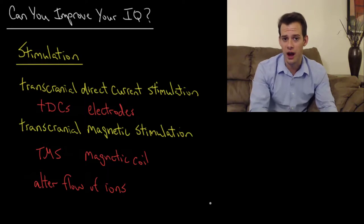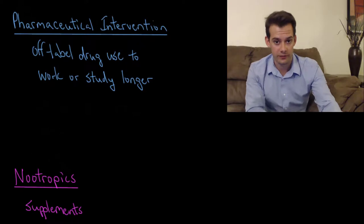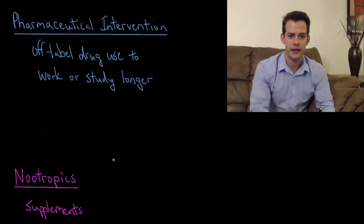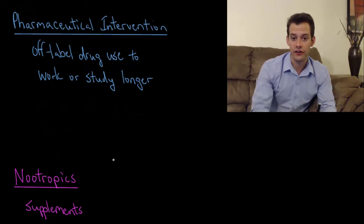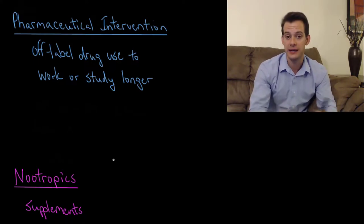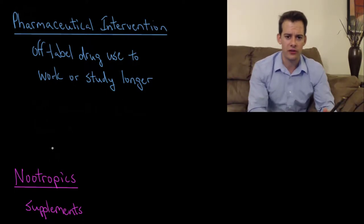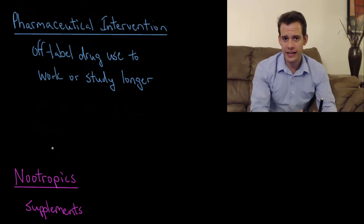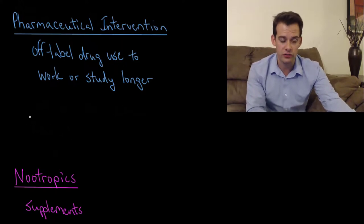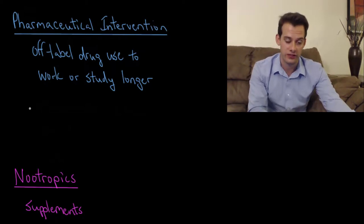Now another way that people try to alter their cognitive abilities is through the use of drugs. So this brings us to pharmaceutical intervention as an attempt to alter cognitive ability. And there's two main ways that this occurs. The first is the off-label use of drugs in order to help people to work or study longer or to possibly change their cognitive functioning. So the drugs that are used here are often drugs that are associated with either attention disorders or wakefulness disorders. Off-label use refers to using a drug for purposes other than what it was designed for.